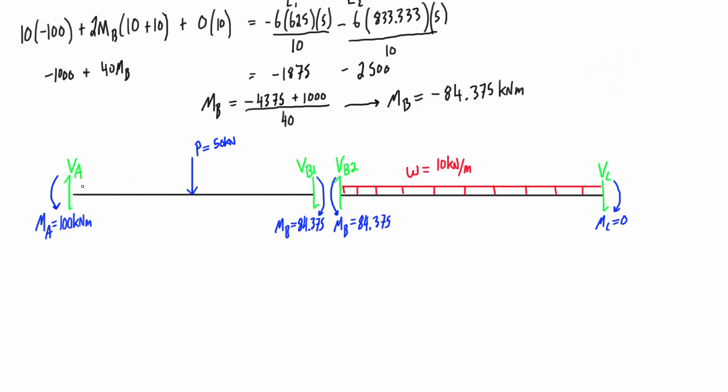Now we can solve for the shears by just doing the sum of moments about a point and then the other shear by doing the sum of forces in the y direction. Vb1, if we take the sum of moments about A, we get it to be negative 23.4375 kilonewtons, and if we do the sum of forces in the y direction that gives us Va is 26.5625 kilonewtons.